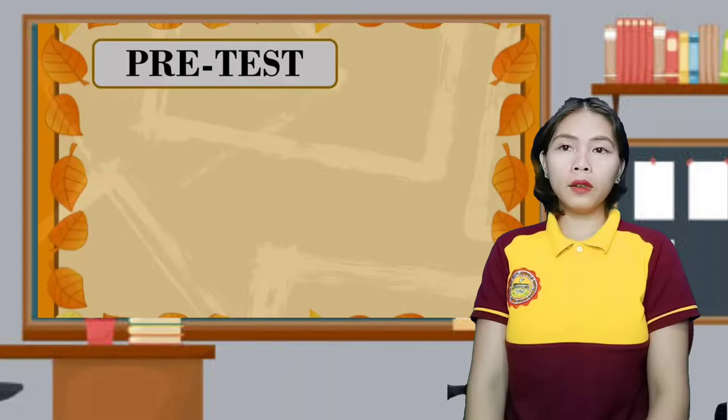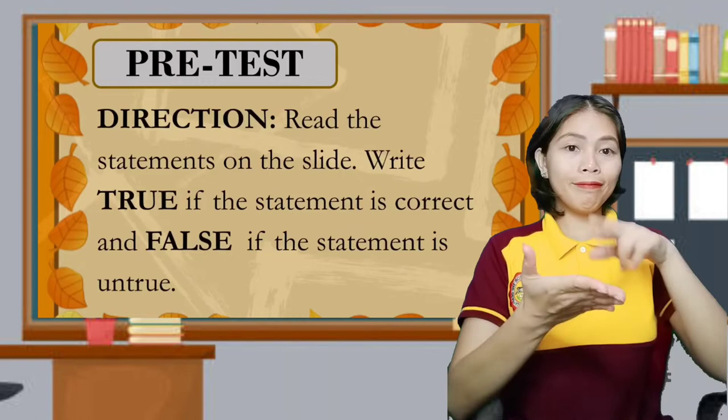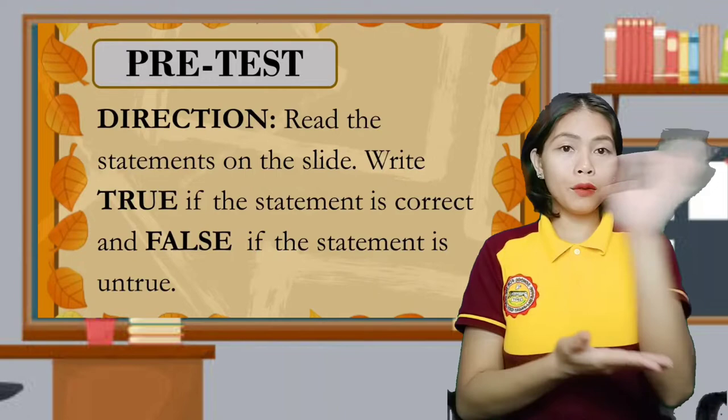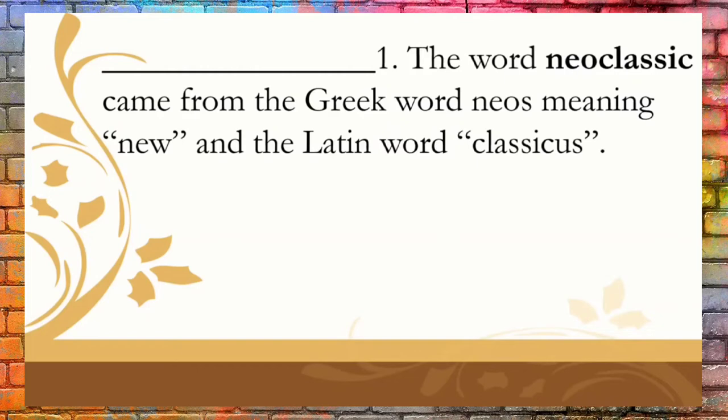Let's start with the pretest. You have to read the statements and write true if the statement is correct, and false if the statement is untrue. Statement 1: The word neoclassic came from the Greek word 'neos' meaning new and the Latin word 'classicus.' The correct answer is true.